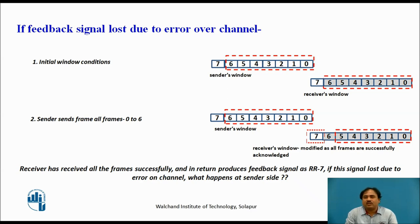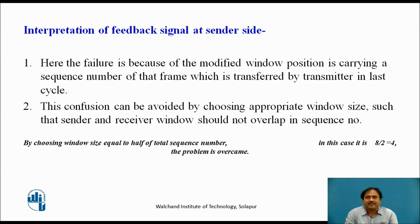Frame number 6 is not part of the new legal window. Now suppose the feedback sent by the receiver is lost due to a channel error, so the transmitter is waiting. After some time, the timer for frame 0 elapses and the sender retransmits frame 0. When frame 0 arrives at the receiver, its sequence number lies within the legal window, so the receiver accepts it and sends it to upper layers. But in the data link layer, it is found that the frame was already received — creating a duplicate. The protocol fails again.